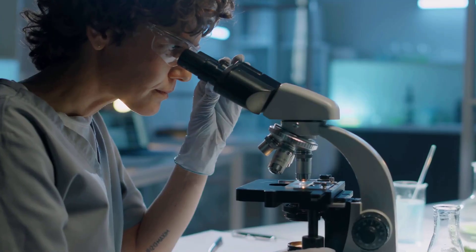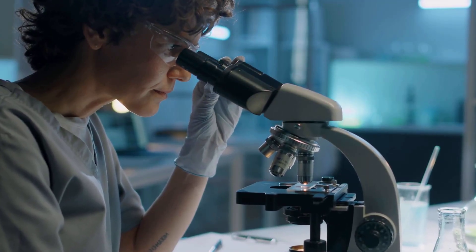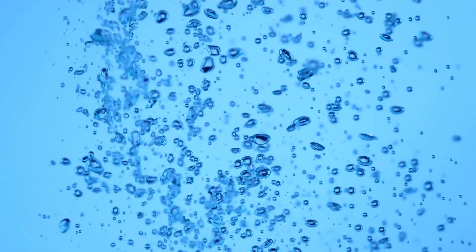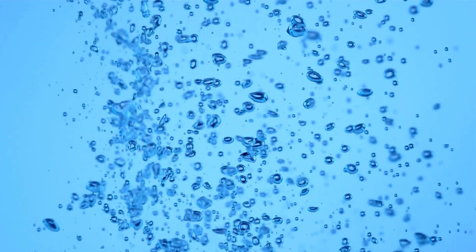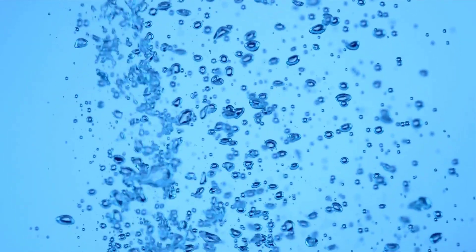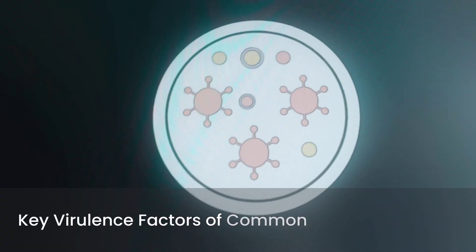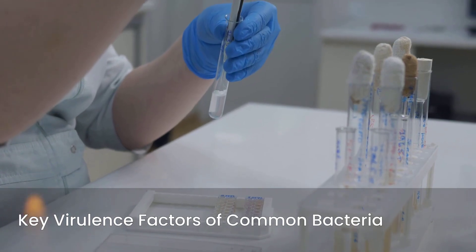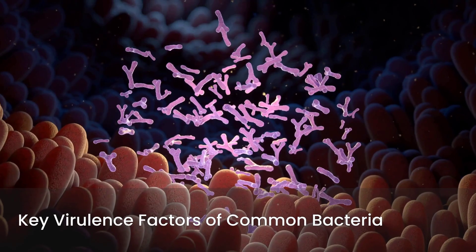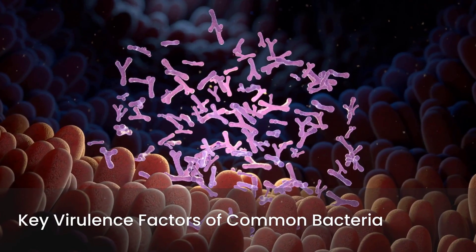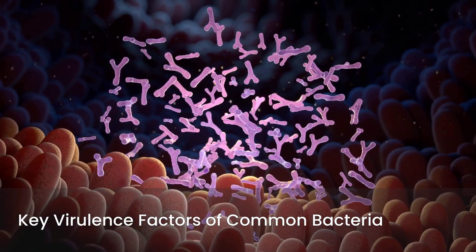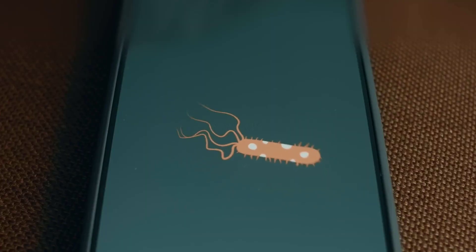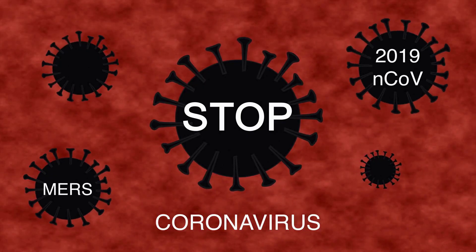First up, bacterial identification — this is foundational. You absolutely need to know your gram stains and bacterial shapes cold. Gram-positive cocci, gram-negative rods — these are your bread and butter. Beyond just morphology, understand the key virulence factors for common bacteria. What makes Staph aureus so dangerous? What toxins does Clostridium produce? These details are often tested. Familiarity with classic bugs is non-negotiable.